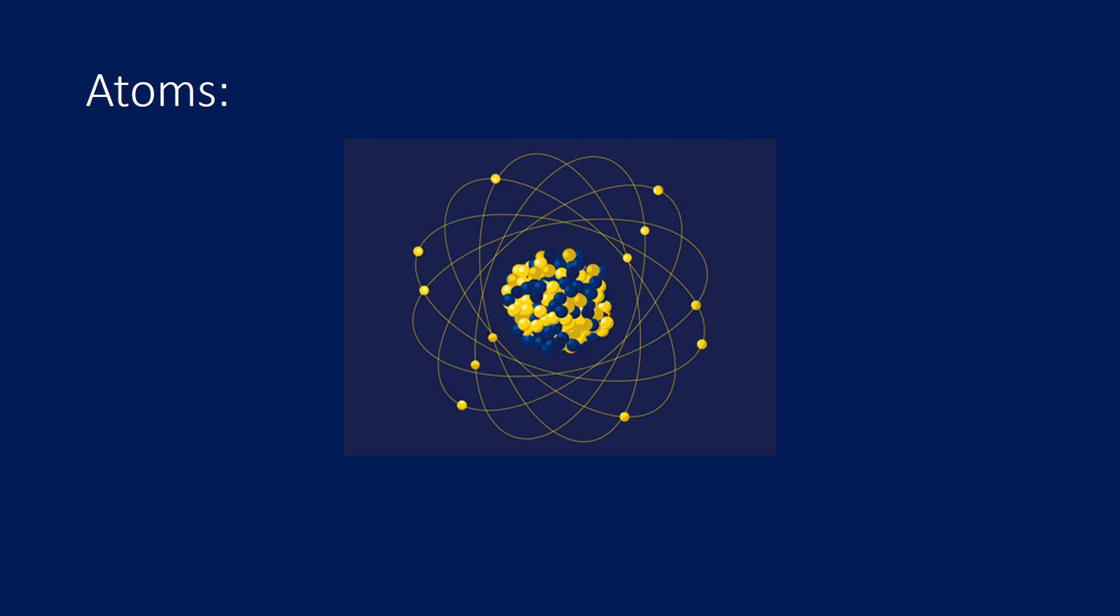Protons and neutrons are heavier than electrons and reside in the center of the atom, which is called the nucleus. Electrons are extremely lightweight and exist in a cloud orbiting the nucleus. Protons are positively charged particles and electrons have a negative charge and are electrically attracted to the positively charged protons.